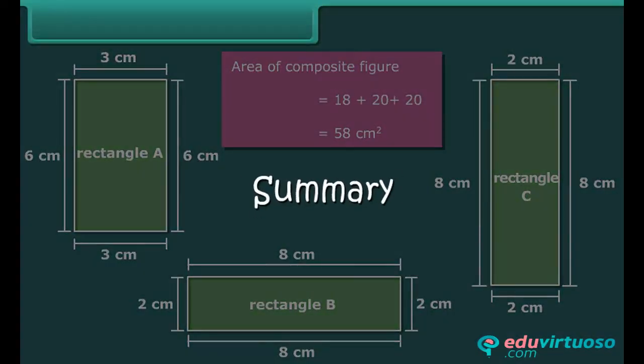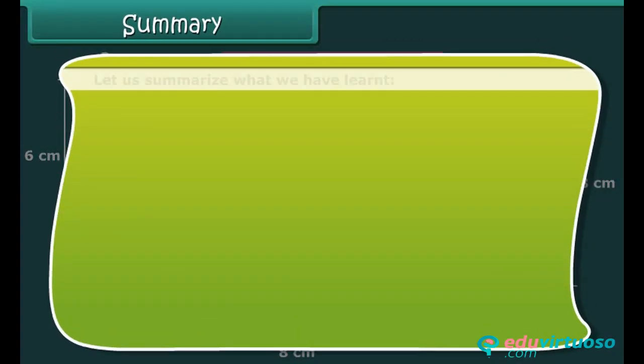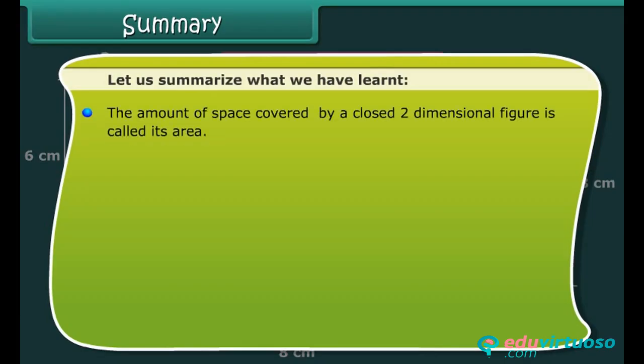Summary. Let us summarize what we have learned. The amount of space covered by a closed two-dimensional figure is called its area. Area of a figure can be calculated by counting the square method.